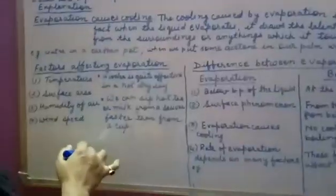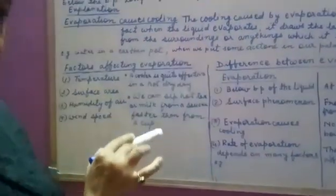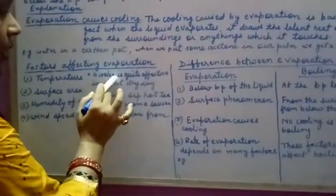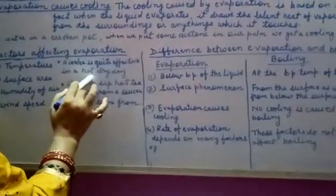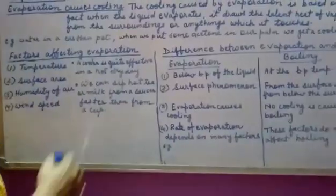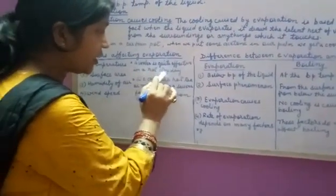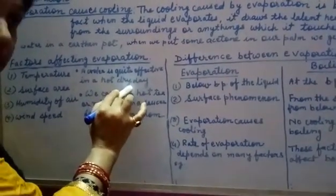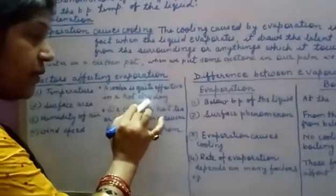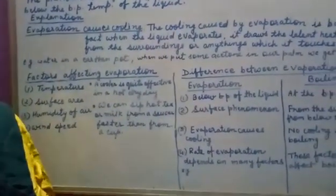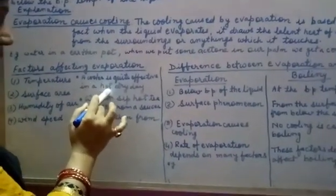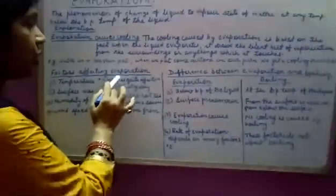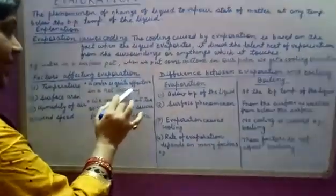We can understand these factors with the help of some examples. A cooler is quite effective on a hot dry day. Hot means increased temperature, dry means low humidity — these two factors favor the process of evaporation. Evaporation takes place at a faster rate under these two conditions, and therefore a cooler is quite effective on a hot dry day.